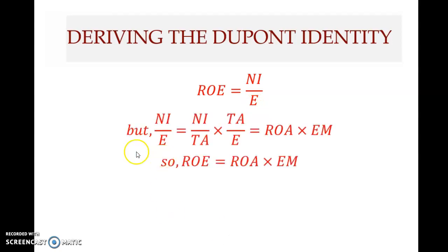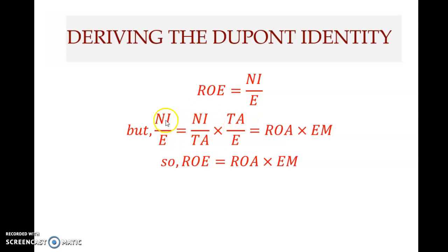Net income over equity can be expanded to two components. We have net income in the numerator and equity in the denominator. We multiply and divide by total assets, so we do not change the ratio — we just expand it. Therefore we get two ratios: net income over total assets, and total assets over equity. Net income over total assets is ROA, and total assets over equity is called the equity multiplier.